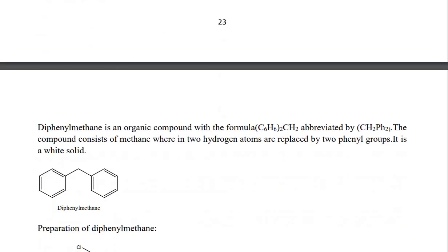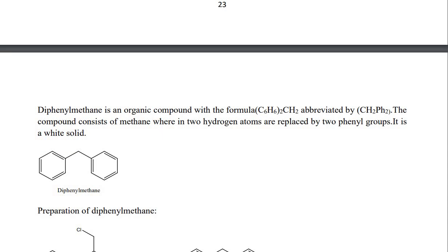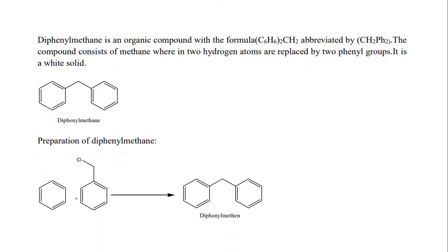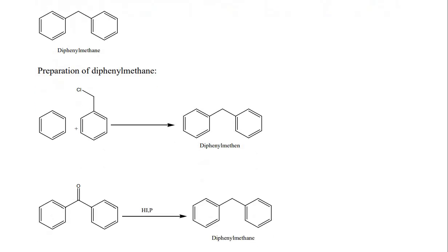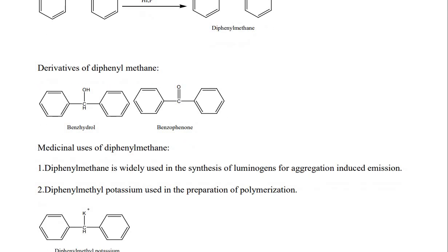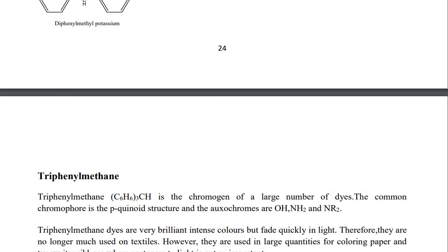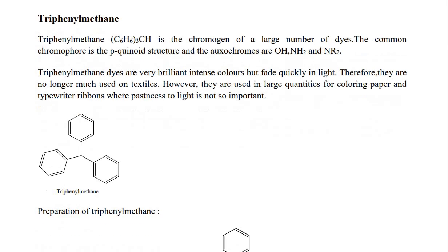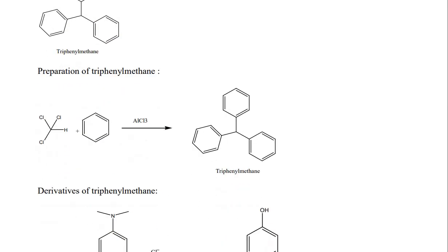Diphenylmethane is an organic compound with the formula (C6H5)2CH2. The compound consists of methane wherein two hydrogen atoms are replaced by two phenyl groups. It is a white solid. Preparations and derivatives of diphenylmethane include benzhydrol. Every compound has some medicinal use, and diphenylmethane derivatives are also pharmacologically relevant.